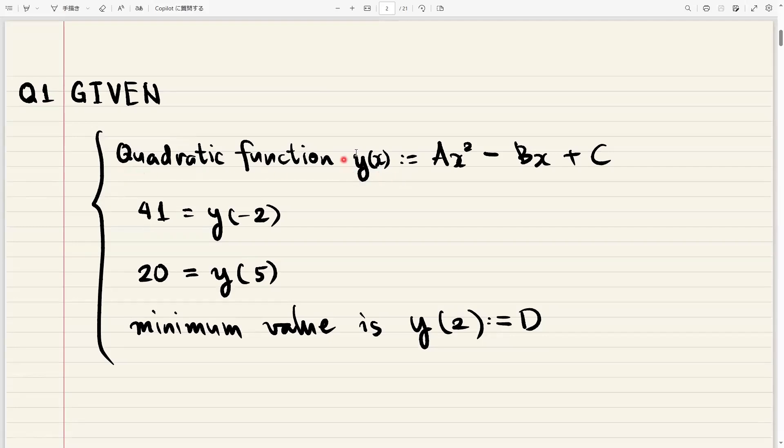There is this quadratic function y of x that is given to be ax squared minus bx plus c, where a, b, and c are constants. We are told that this function has a value of 41 when x is minus 2, and a value of 20 when x is 5.